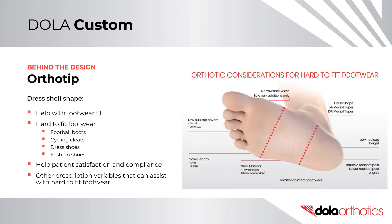Ortho Tip: The dress shell shape can be used to help with footwear fit, including hard-to-fit footwear styles like football boots, cycling cleats, dress shoes and fashion shoes. This helps with patient satisfaction and compliance when they can wear the shoes they want to. Other prescription variables that can assist with hard-to-fit footwear include the use of as many intrinsic variables as possible, including intrinsic rearfoot posts, medial heel skives, lateral heel skives, medial negative tapers, narrow shell width, and narrow heel cut width.